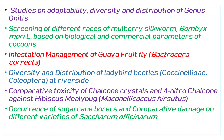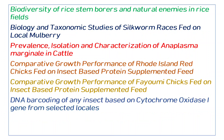You can compare the toxic effects or efficacy of two to three insecticides. Sugarcane borers and rice stem borers can be studied for damage. Additionally, taxonomic study of silkworms, and prevalence, isolation, and characterization of Anaplasma marginale in cattle can be conducted.